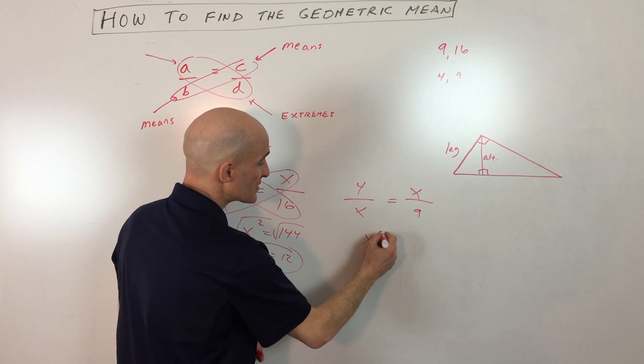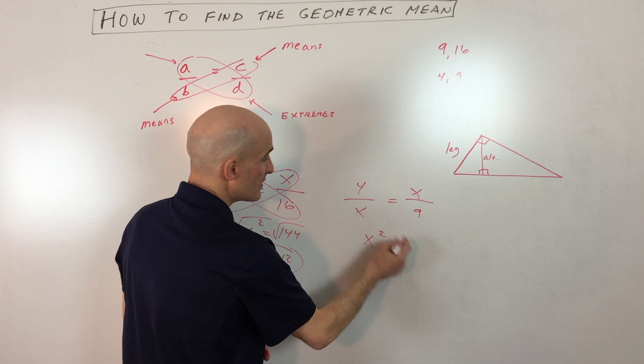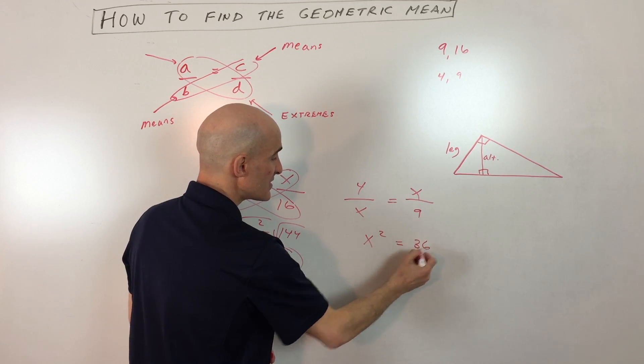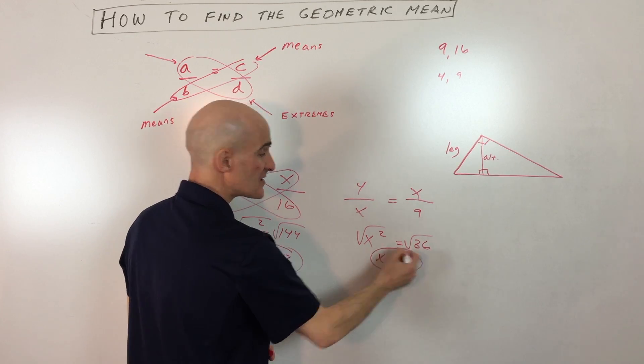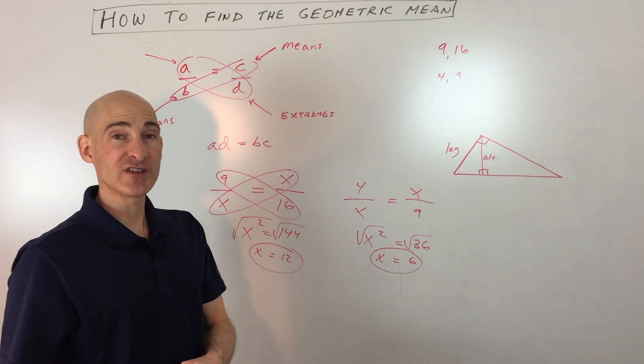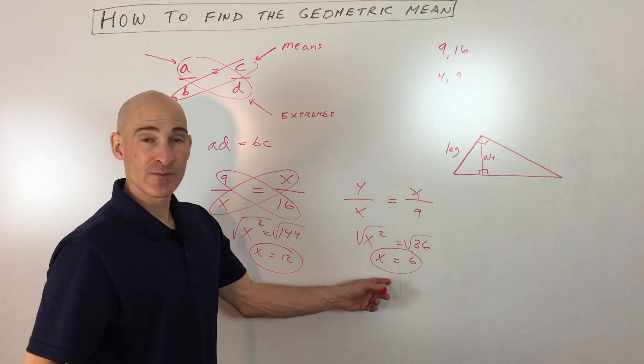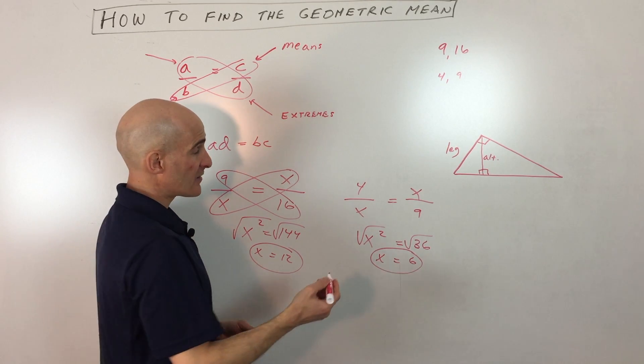So you can see that's gonna be X squared equals 4 times 9, which is 36, and if you take the square root of both sides, you can see that X is coming out to 6. Now you might be thinking to yourself, well, isn't there a simpler way to do this? And you're exactly right.